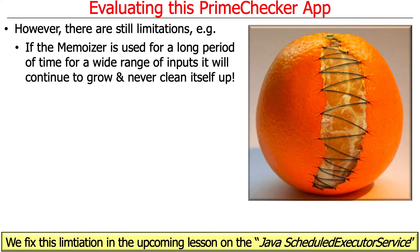Here's a key problem with this approach. Even though we've solved the issue of parameterizing behaviors for prime number checking and added caching, if you use this memoizer for a long period of time, the cache just keeps growing and growing. We never clean out the cache, so even items that haven't been used for a long time just stick around. The concurrent hash map will keep growing and start to burst at the seams.